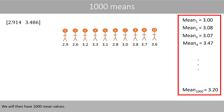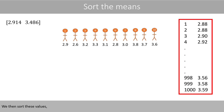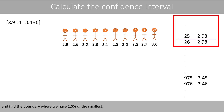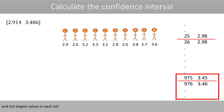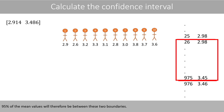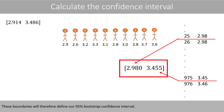We save the mean up here, then generate a new bootstrap sample and calculate its mean, and save it up here. We continue like this, for example 1,000 times. We will then have 1,000 mean values. We then sort these values and find the boundary where we have 2.5% of the smallest and largest values in each tail. 95% of the mean values will therefore be between these two boundaries, which define our 95% bootstrap confidence interval.